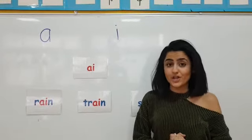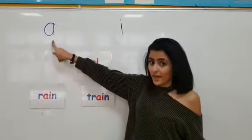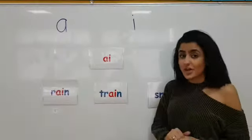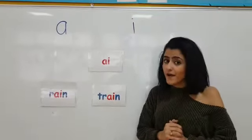Kids, today we are going to learn a new digraph. Here we have the letter A and we have the letter I. As you can notice, both of them are vowels.